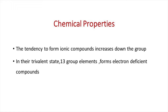Next we discuss the chemical properties of Group 13 elements. Group 13 elements form electron-deficient compounds, as they have the ns² np¹ outer electronic configuration, allowing a maximum of only six electrons in the valence shell when three covalent bonds are formed. Boron forms covalent compounds only. The tendency to form covalent compounds decreases and the tendency to form ionic compounds increases as we move down the group.